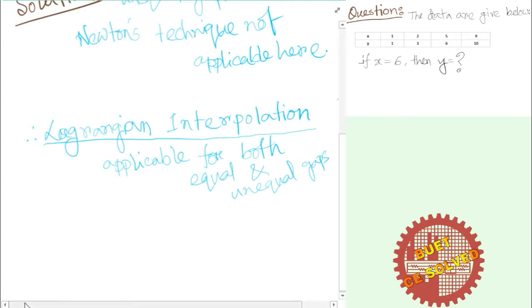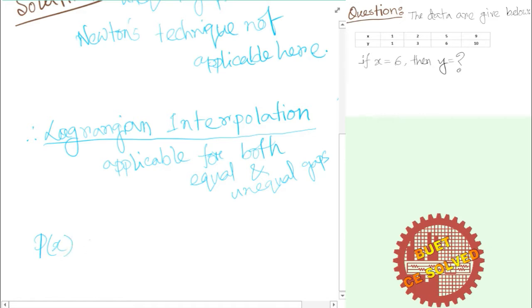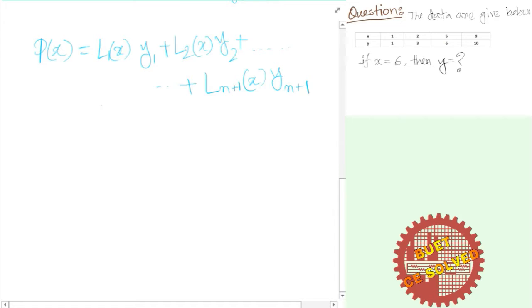The formula for Lagrange interpolation: given data points (x1, y1), (x2, y2), ..., (xn+1, yn+1), the interpolated value P(x) is equal to L1(x)·y1 + L2(x)·y2 + ... + Ln+1(x)·yn+1, where L1, L2, etc. are the Lagrange basis functions corresponding to each data point.